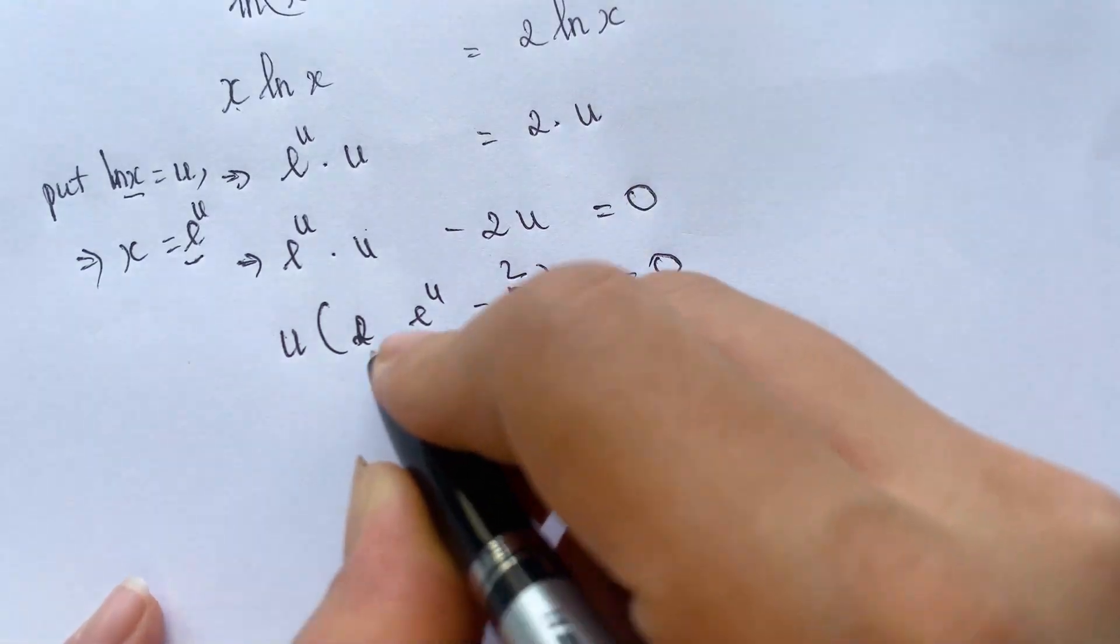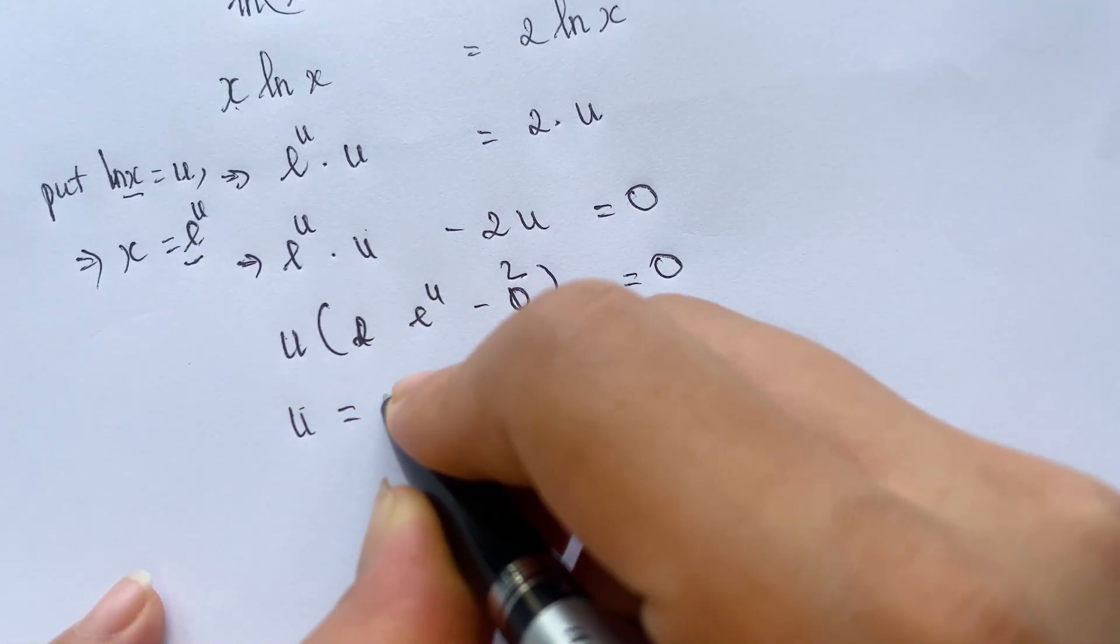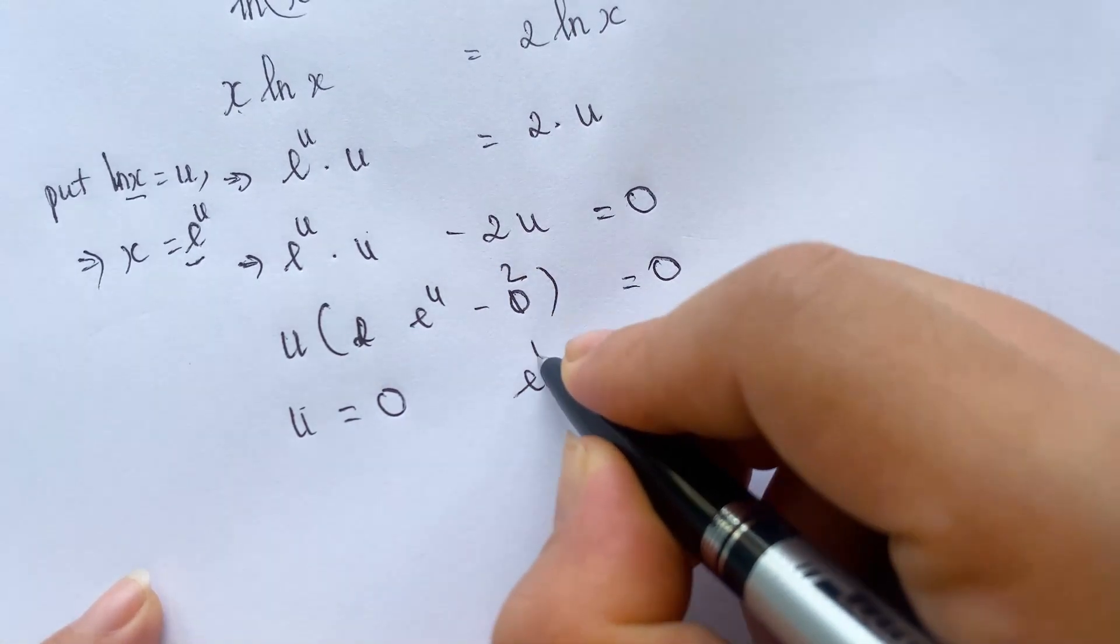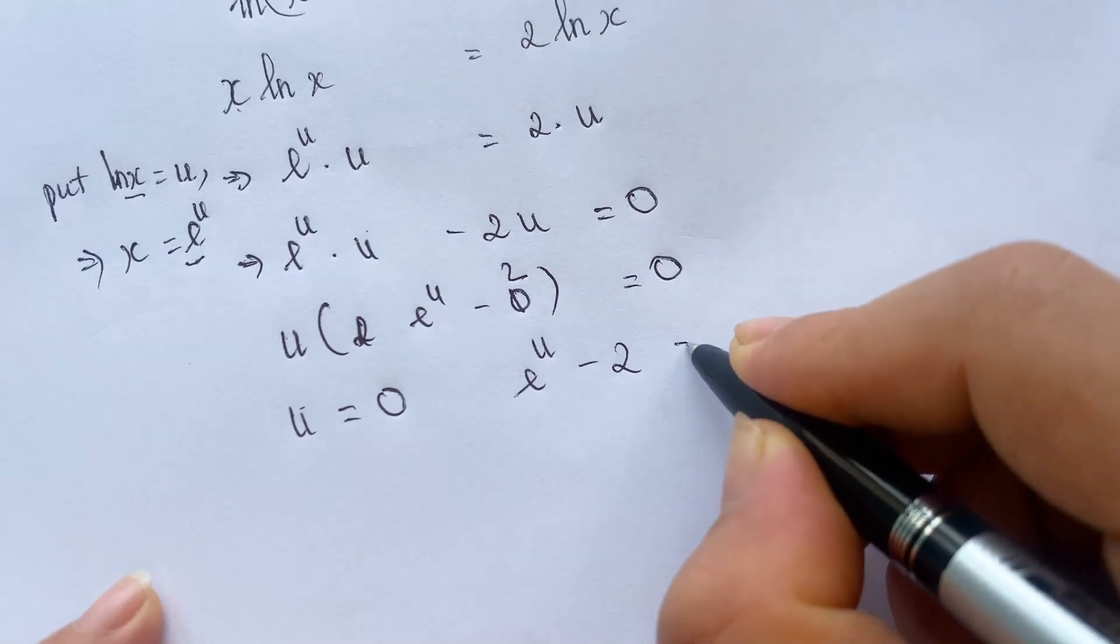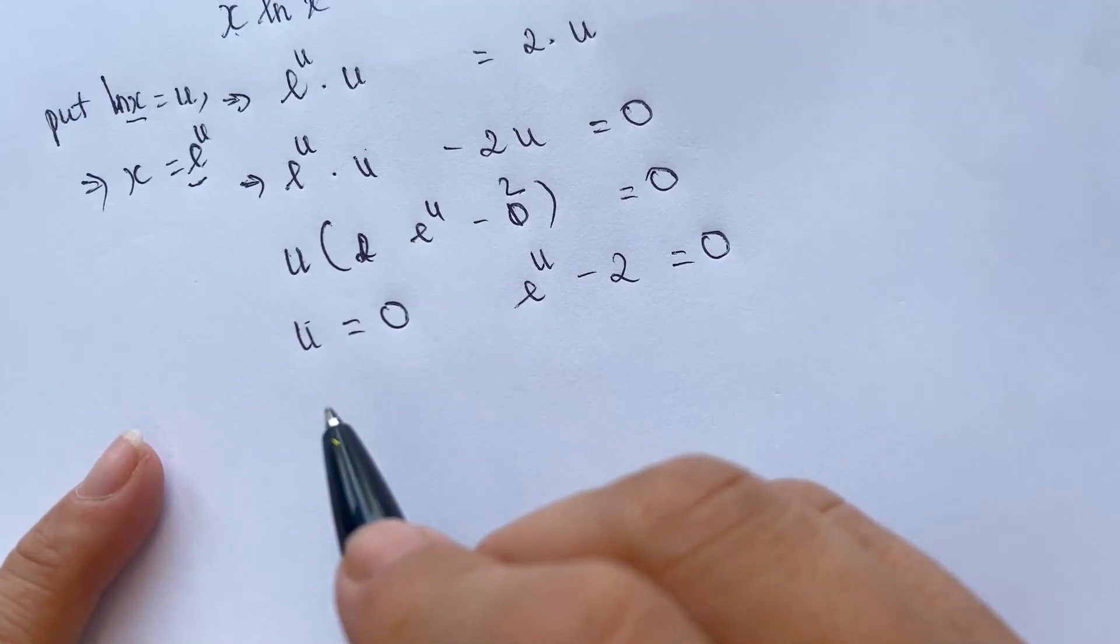And so we can have u equals 0. And then in brackets, e power u minus 2 equals 0.